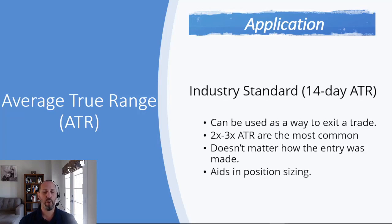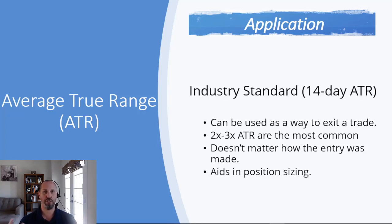ATR can be used as a way to exit a trade, and the most common applications are two times or three times ATR. So you take the ATR for the day — the average true range — and multiply it by either two or three. It doesn't matter how the entry was made. You can enter off a support retracement, a moving average crossover, or a continuation chart pattern breakout. It doesn't matter how you enter the trade; you can use ATR, which is a measure of market volatility, to set the proper stop loss and also how to correctly size your position.